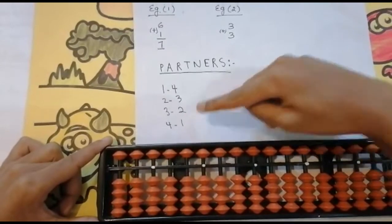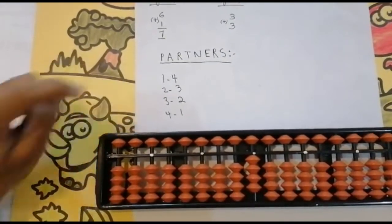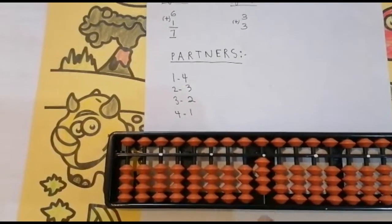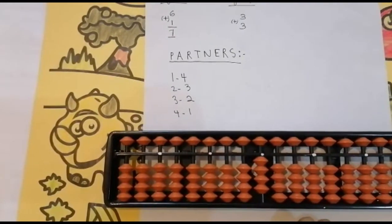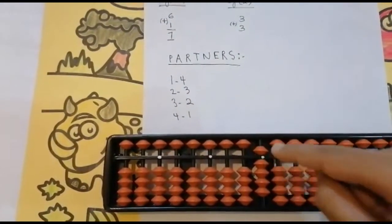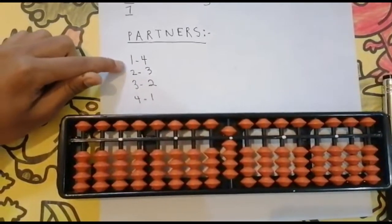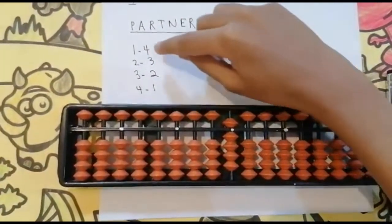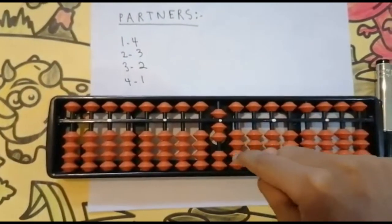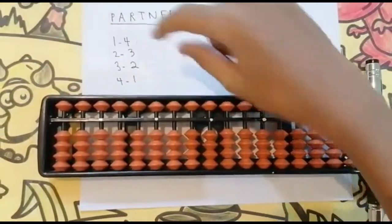For sums like this we will be using partners. The partner of one is four, the partner of two is three, the partner of three is two, and the partner of four is one. For example, I have added four beads and I need to add one more — is it possible? Not possible, because I don't have a bead there. So use the upper bead: add five using your four finger. I added five but I need to add only one, so four extra values must be reduced — one, two, three, four. Keeping the finger, got five.